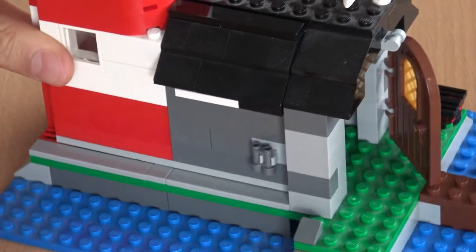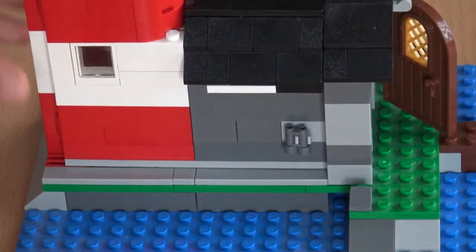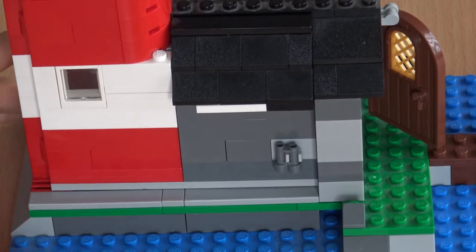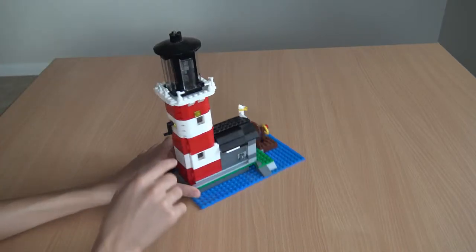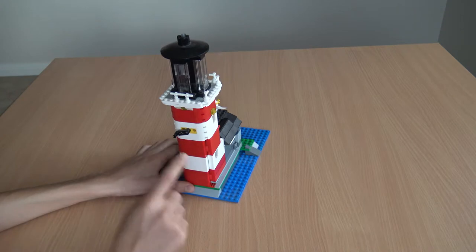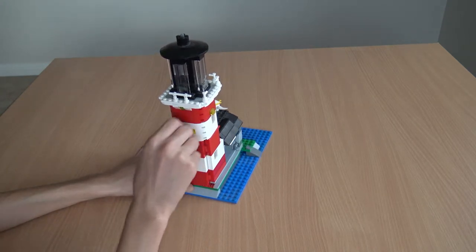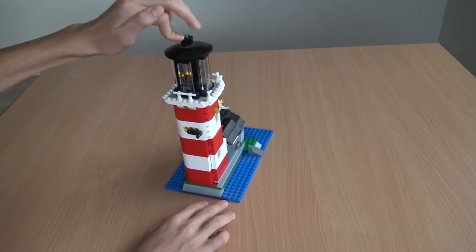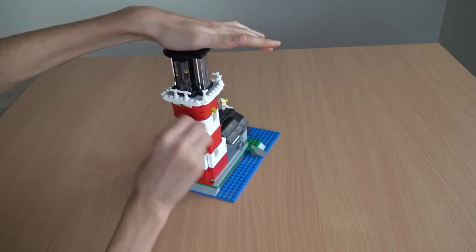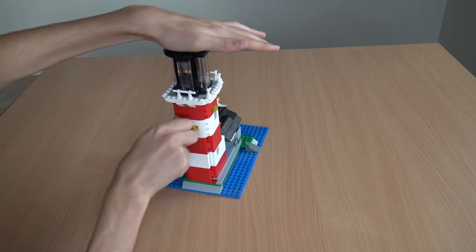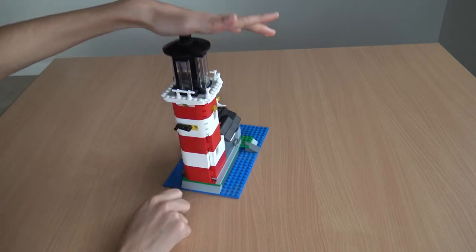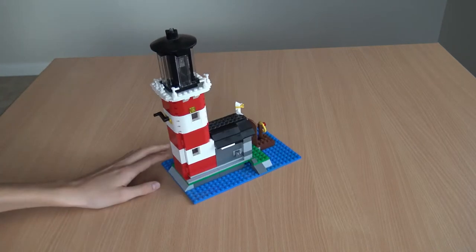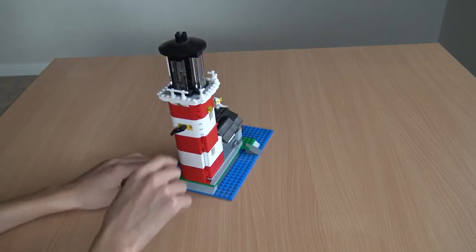So now we shall take a look at the lighting and the whole lighting functioning system. You've got this piece over here and this actually extends to make the light spin itself. Just push this down right here and you can spin this and it looks really good at night. I'll close the windows and show you what it looks like in darkness.